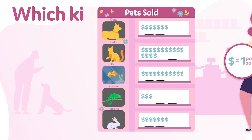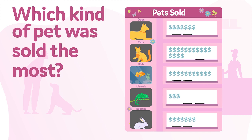Which kind of pet was sold the most? There are many more dollar signs in the cat row than in the other rows. Looking at the pictograph information, you can see that cats were sold more than any other kind of pet.